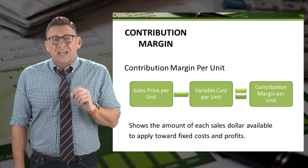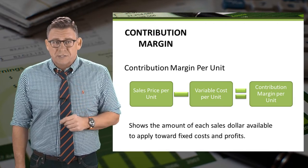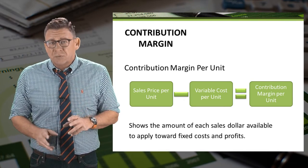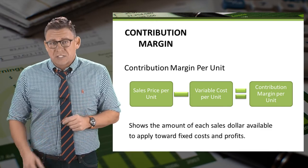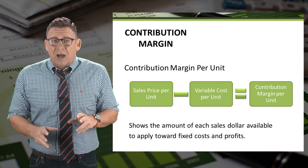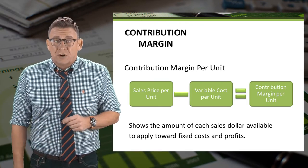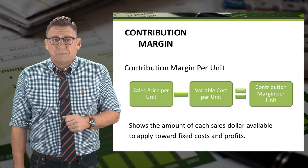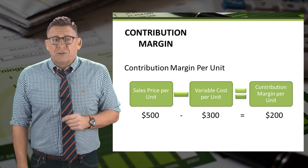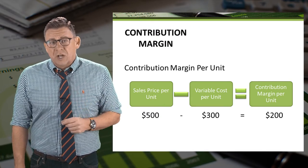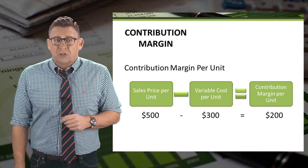Let's learn this simple yet useful concept called contribution margin per unit. It is calculated by taking the sales price per unit and subtracting the variable cost per unit. It's the amount of each sales dollar that is available to cover fixed costs and normal profits. In this example, the price per unit is $500 and the variable cost per unit is $300, thus the contribution margin is $200 per unit.